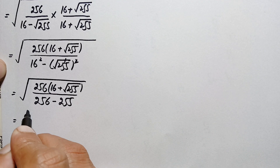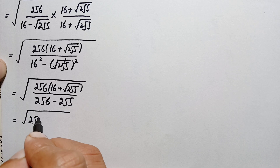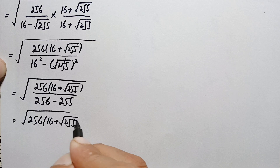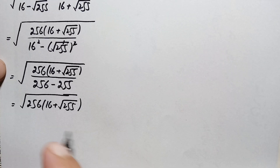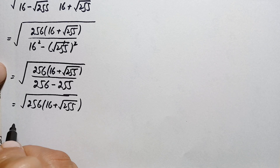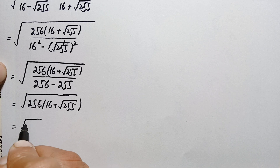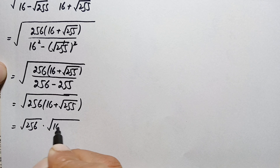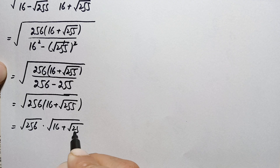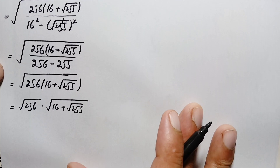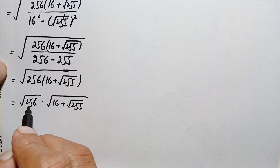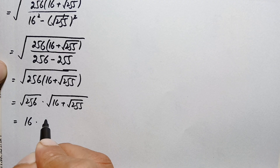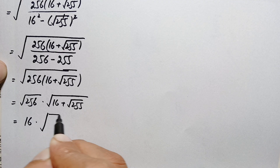Any number divided by 1 is the same number, so this becomes the whole square root of 256 times (16 plus square root of 255). Next we can write this as square root of 256 times square root of (16 plus square root of 255). Since 256 is 16 squared, square root of 256 is simply 16.